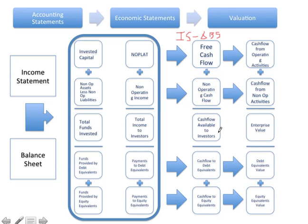After the midterm and spring break, when we start valuations, we're going to forecast the free cash flows — that's the operating value — and the non-operating cash flows for the non-operating value. We add those together for enterprise value. Enterprise value minus debt equals equity. The forecasted debt cash flows include all payments, interest, and changes in debt; forecasted equity cash flows include dividends and changes in equity.